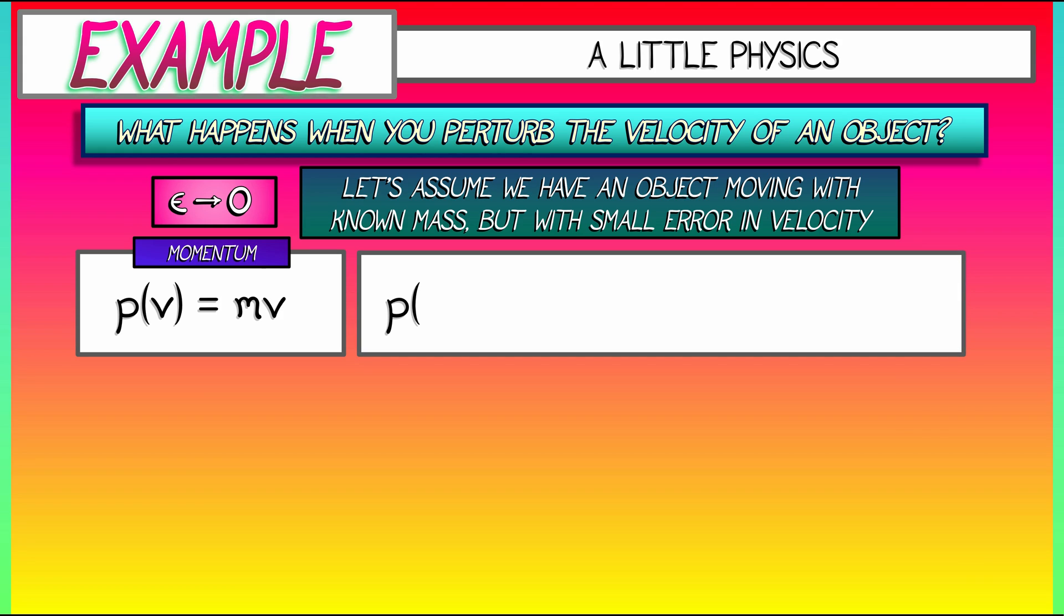Well, p of v plus epsilon is m times v plus epsilon. That's mv, the momentum, plus m times epsilon. That means that your uncertainty in the momentum scales with the mass times the uncertainty in the velocity. Okay, no big deal there.